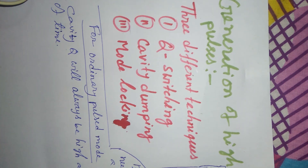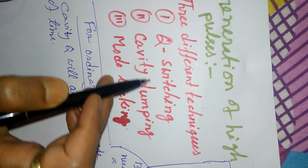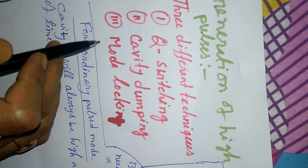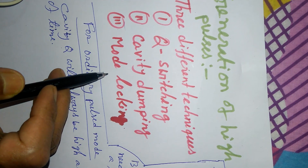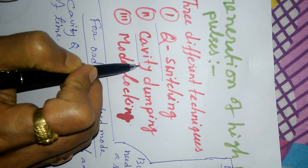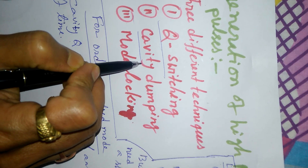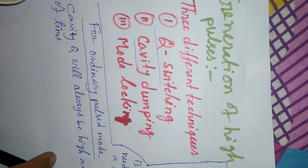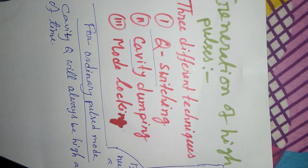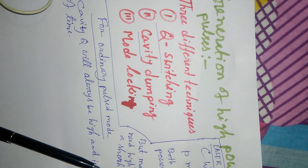There are three different techniques to get high power pulses: one is Q-switching, second is cavity dumping, and third is mode locking. Q-switching and cavity dumping produce large peak powers for a short time. These are the ways we can produce high power laser pulses.